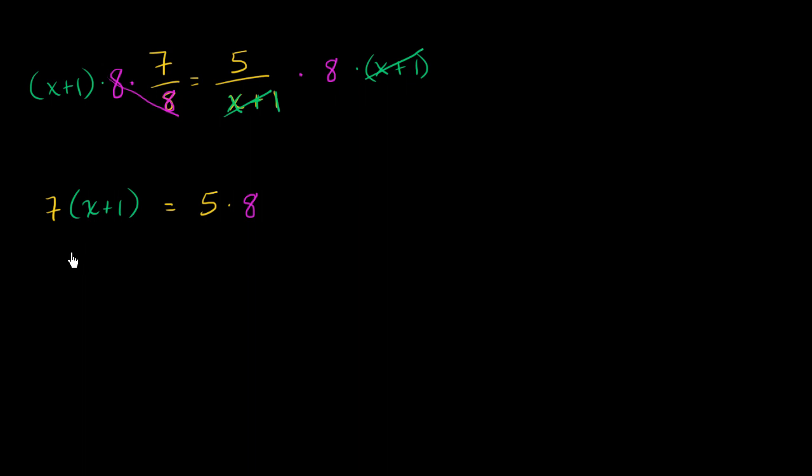So distributing the 7, we get 7x plus 7 is equal to 40. And then subtracting 7 from both sides, we are left with 7x is equal to 33. Dividing both sides by 7, we are left with x is equal to 33 over 7. And if we want to write that as a mixed number, this is the same thing as 4 and 5 sevenths. And we're done.